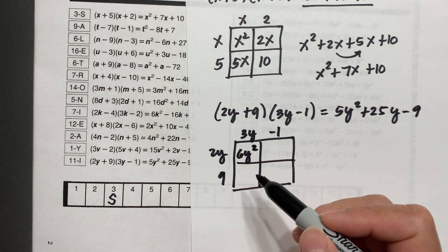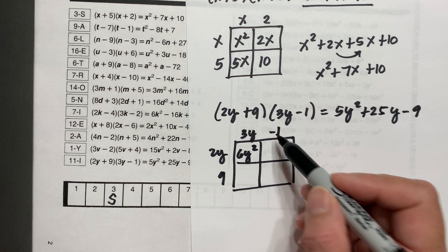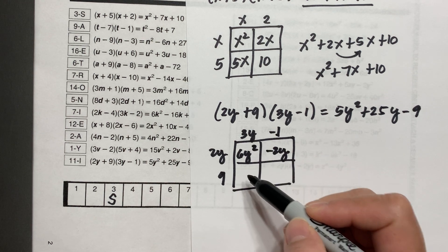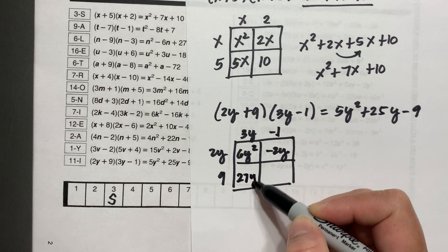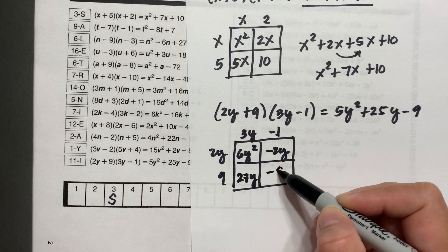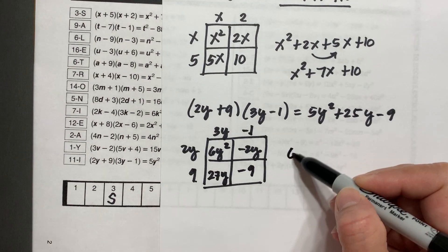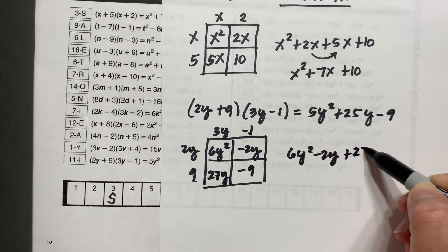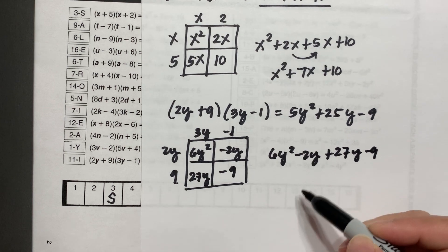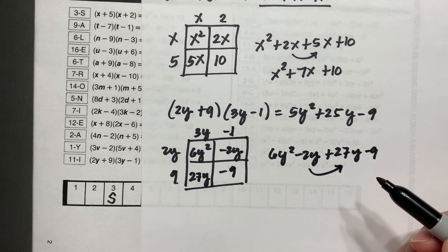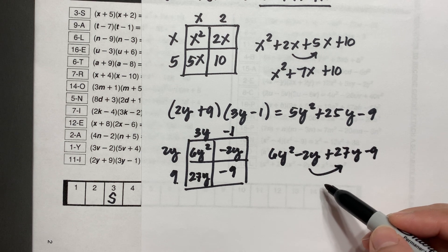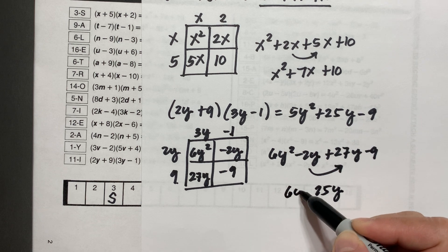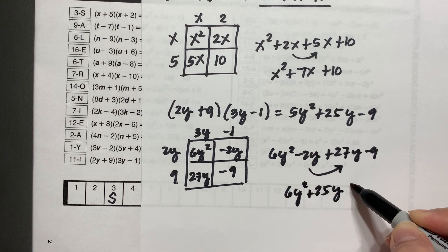2y multiplied by 3y is 6y to the second power — you need to add the exponents for the variable. 2y multiplied by negative 1 is negative 2y. 9 multiplied by 3y is 27y. And 9 multiplied by negative 1 is negative 9. Then: 6y squared minus 2y plus 27y minus 9. Collecting like terms, negative 2y plus 27y is 25y. So we have 6y squared plus 25y minus 9.